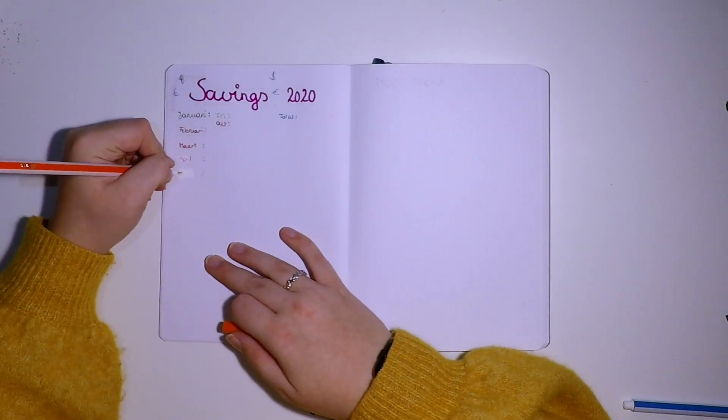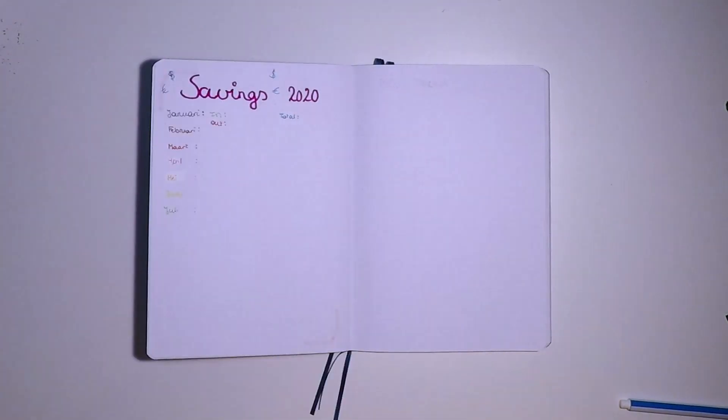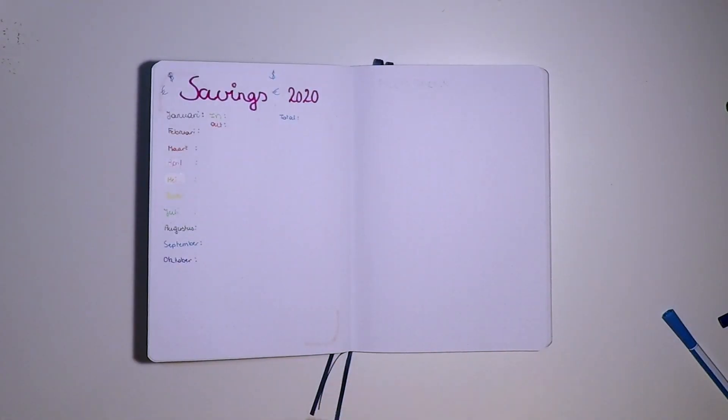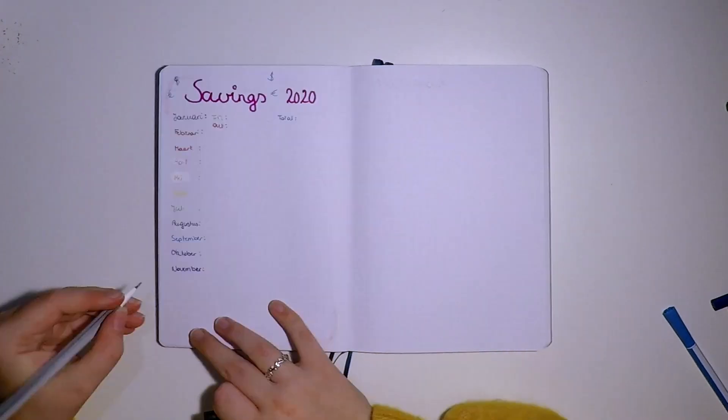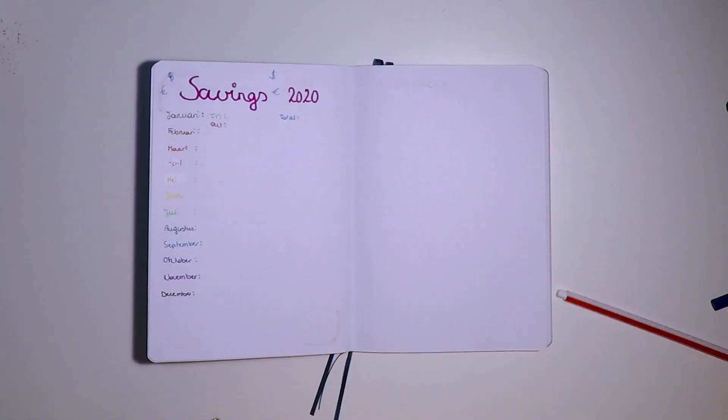But I'm so stupid because I did the months in Dutch, but then 'In-N-Out' is in English and then 'total' also is in English. And then at the end of this page I did it again in Dutch. So it's like two languages at the same time.